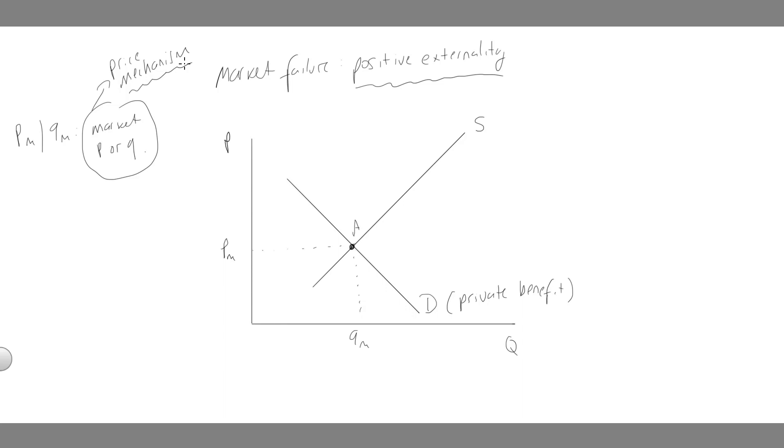So what we're saying though, is that with a positive externality, what we're saying is society gains from one person's actions. So even though our friend here gets this much private benefit, actually in society,